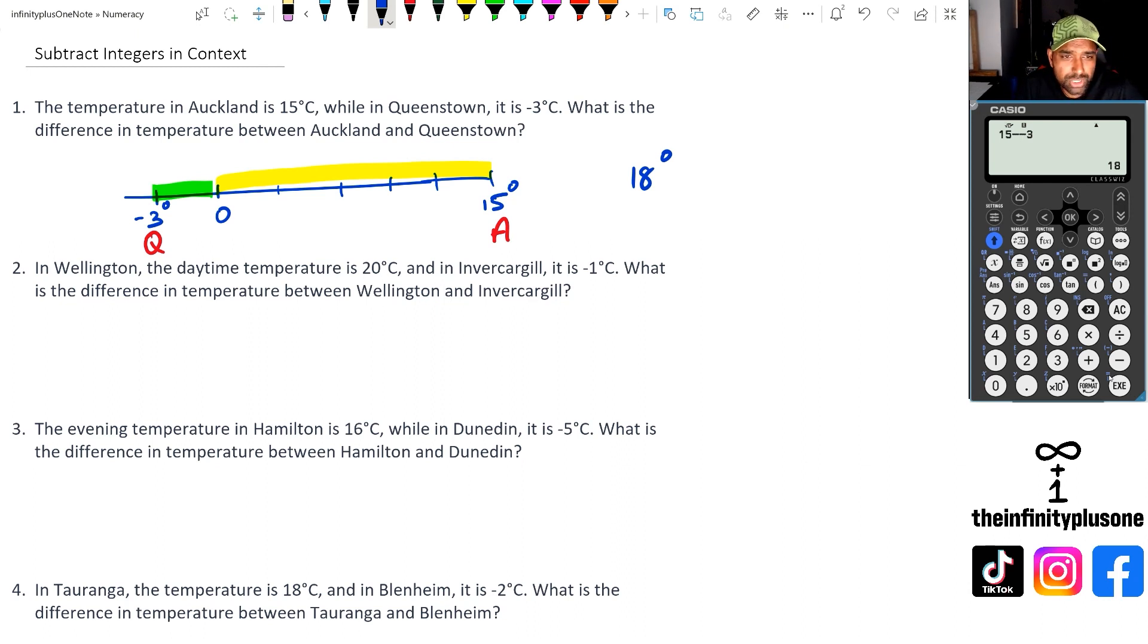So question two, we have 20 degrees for Wellington and Invercargill is at minus 1 degree. So what we're going to do is we've got 20 take away negative 1. Now, on the odd occasion, you might have actually heard this, where if you have two negatives next to each other, you can actually change it to positive. And that's something you can actually do here because you've got two negative symbols right next to each other, which is pretty much switching it over with a positive sign there.